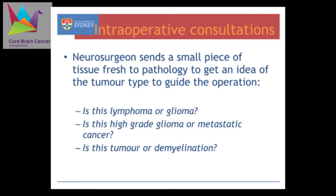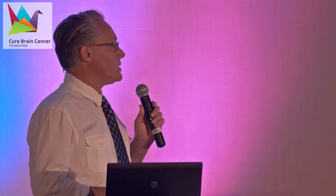The intraoperative consultation is when the neurosurgeon sends a small piece of tissue down to the pathology lab to get an idea of what they're doing. One of the questions we commonly get is: is this a lymphoma or a glioma? That's very important because the treatment of lymphoma is not to cut it out — the treatment of lymphoma is chemotherapy — whereas the treatment for a glioma is to cut it out and then give radio and chemotherapy. The radiologists are often very clever and the surgeon will know before they go in what they're dealing with, but not always.